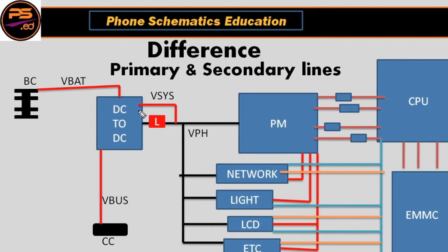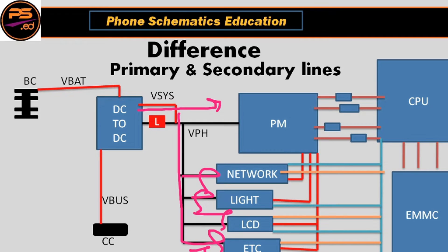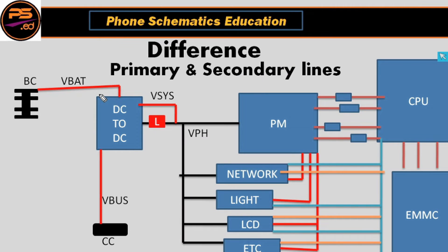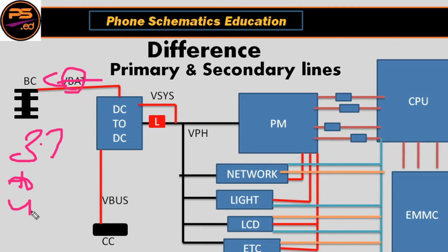After the V-bus, the DC-to-DC IC creates VPH, and this VPH line goes to the power IC as well as other sections like network, light IC, Bluetooth, Wi-Fi, and audio. In this line you get 3.7 to 4.2 volt. After this, the line goes to the DC-to-DC IC and battery connector — this line is called V-bat, the battery voltage line, also at 3.7 to 4.2 volt.